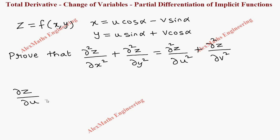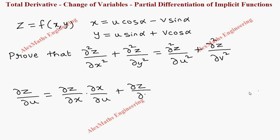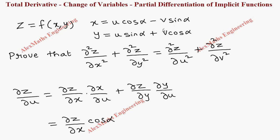In the first part we are going to find ∂z/∂u. This is nothing but ∂z/∂x into ∂x/∂u plus ∂z/∂y into ∂y/∂u. Now ∂z/∂x we keep as it is, and partial differentiation of x with respect to u gives only cos alpha, because differentiation of u is 1 and cos alpha is a constant, and v sin alpha is entirely constant so it is 0. Then plus ∂z/∂y into partial differentiation of y with respect to u, which is only sin alpha.